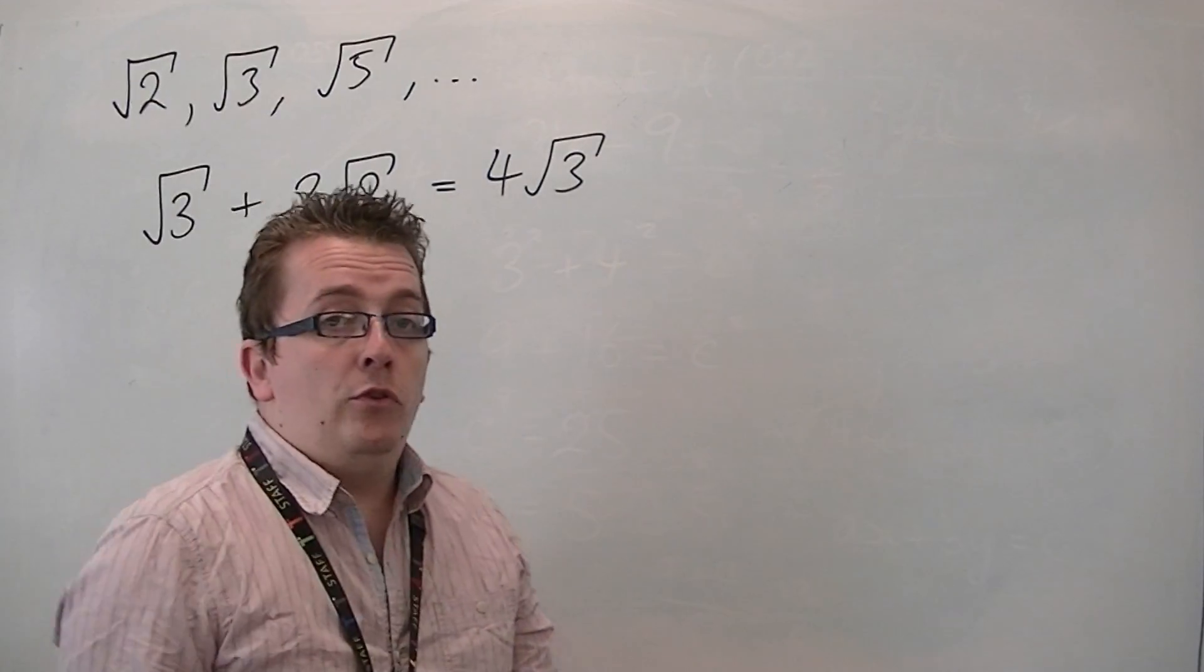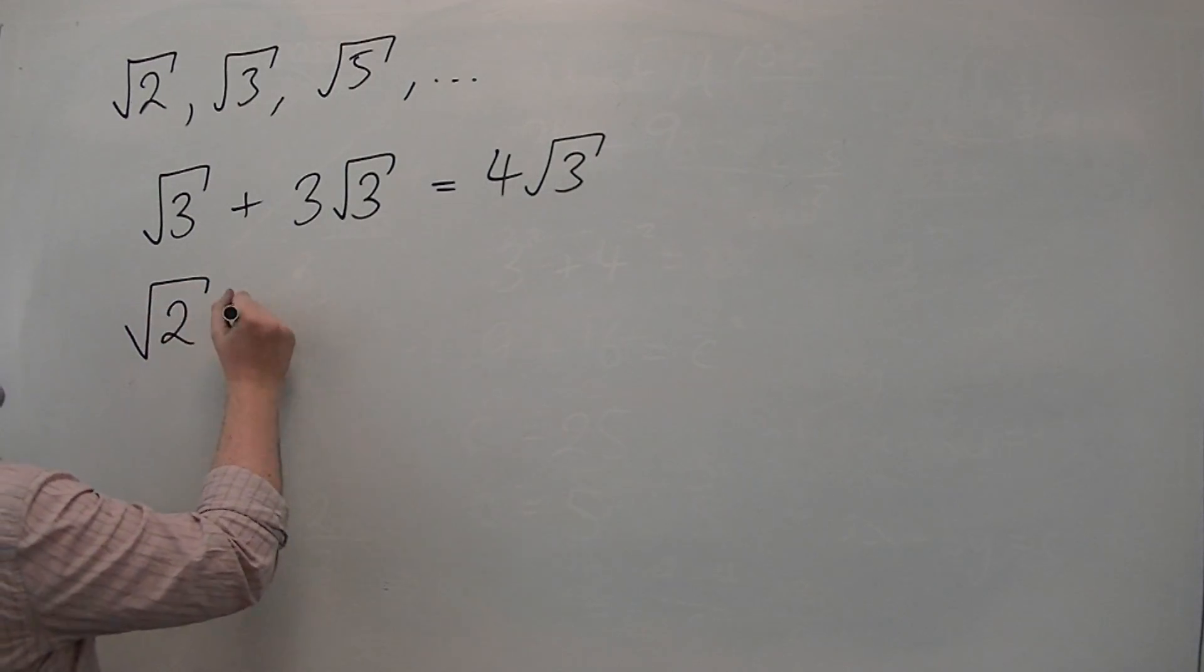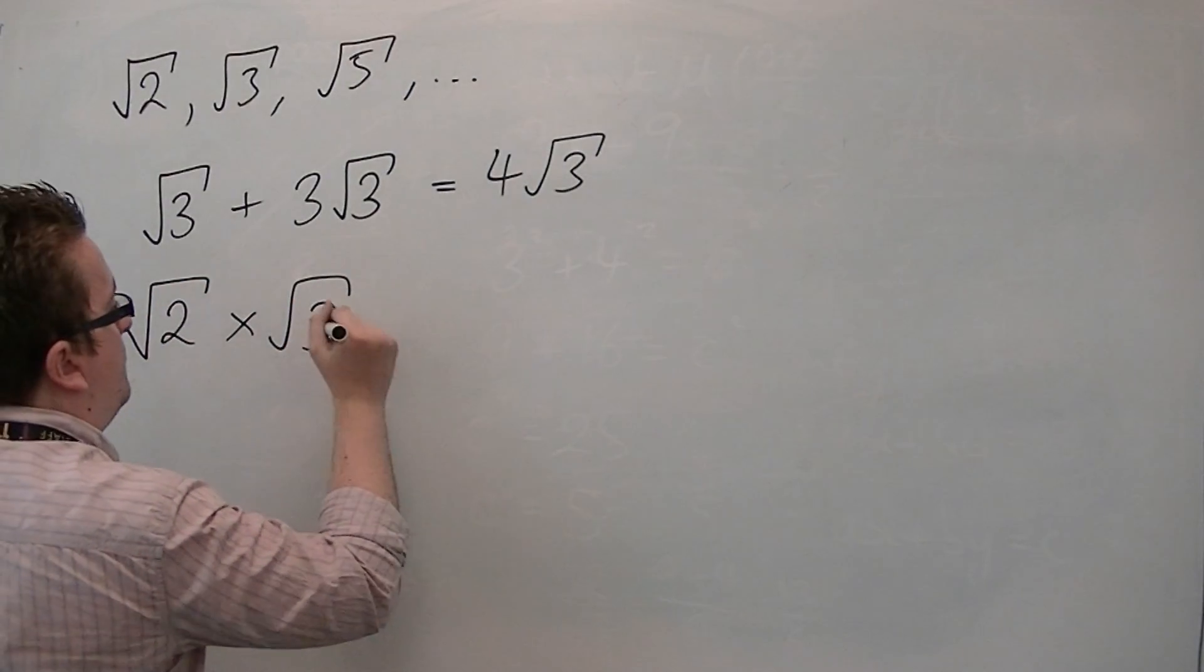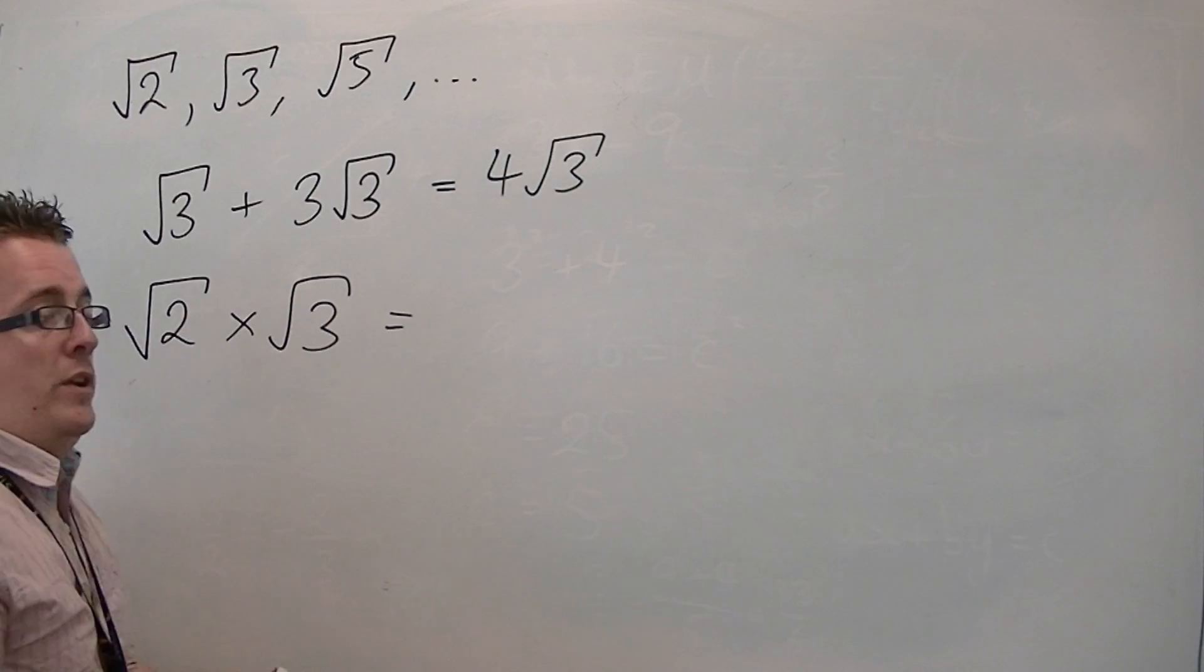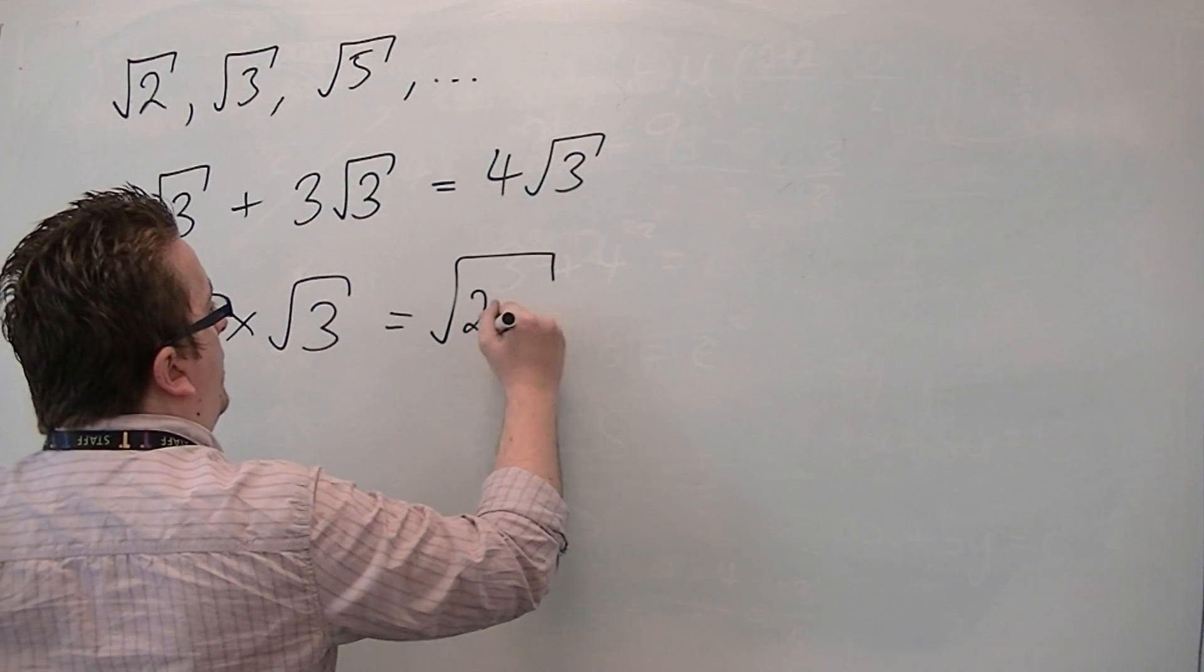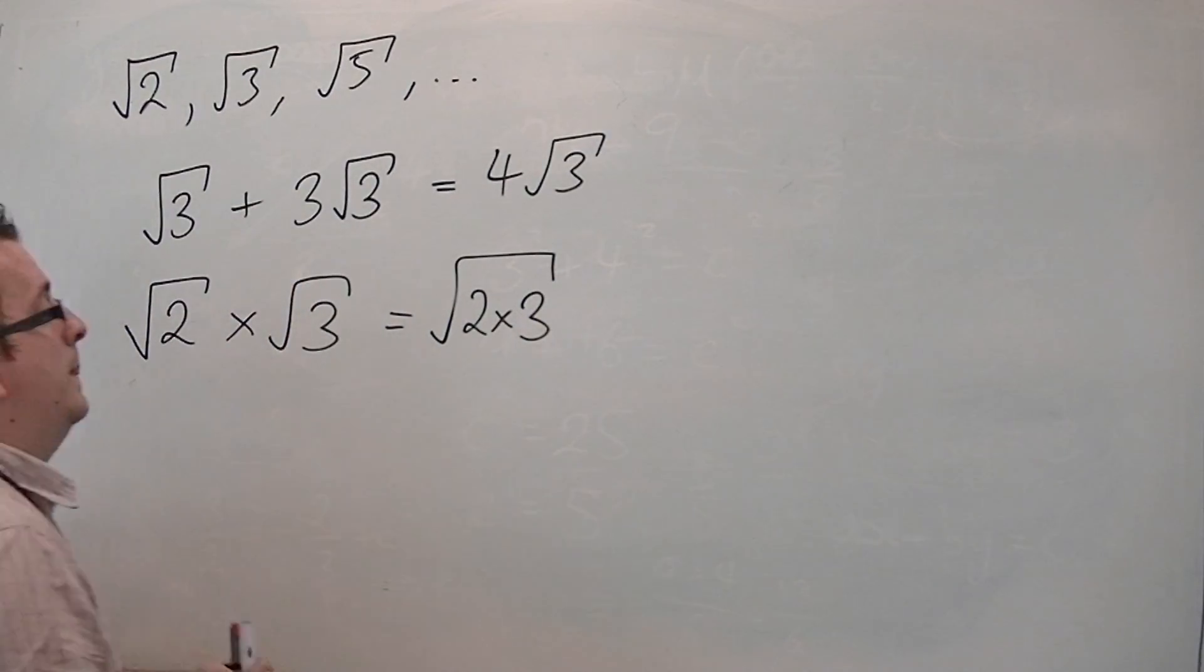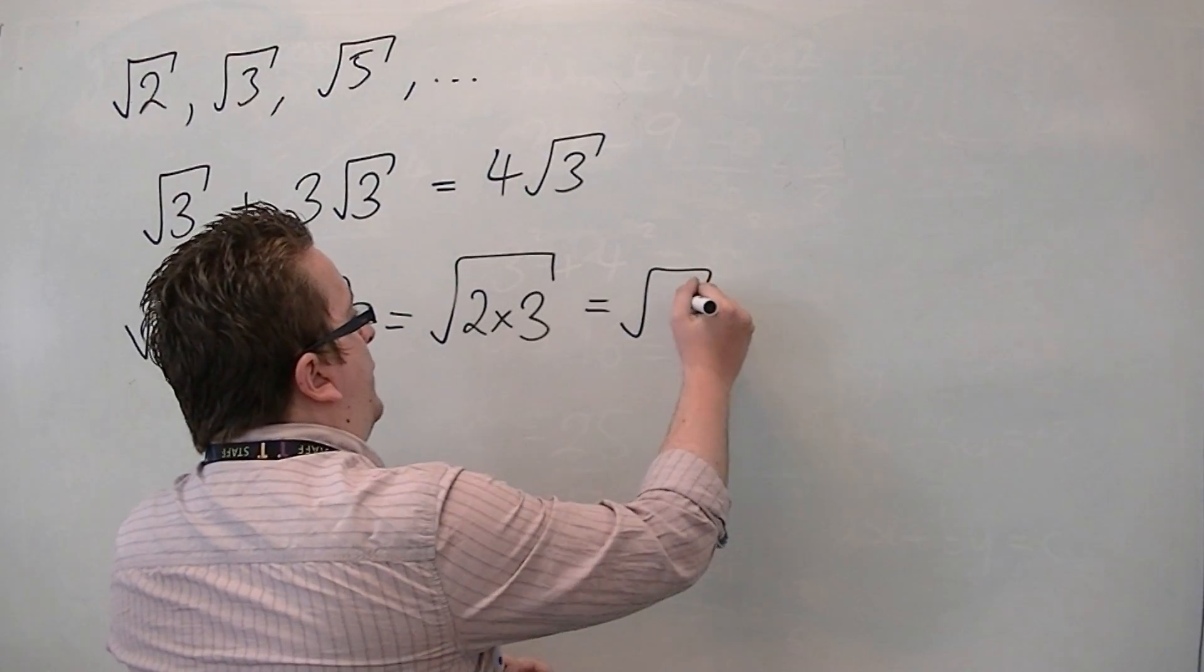You've also got the technique where if you multiply them together, so if you've got root 2 times by root 3, then you can write that as the square root of 2 times 3. So you can bring both of them under the same square root bracket. So that's root 6.